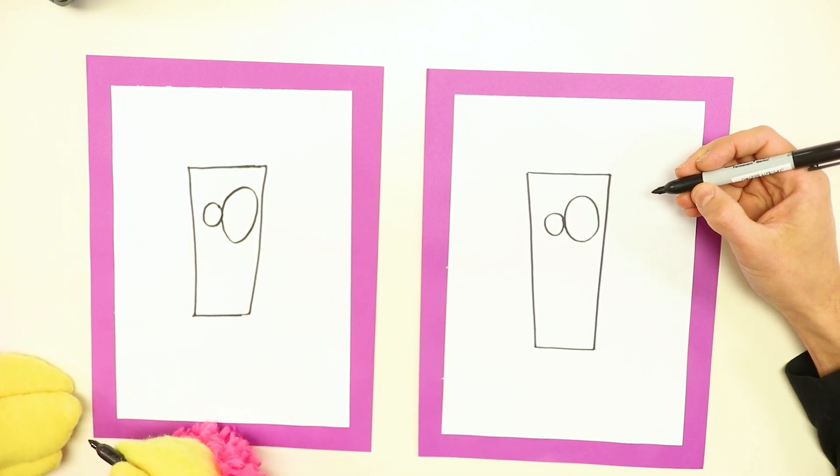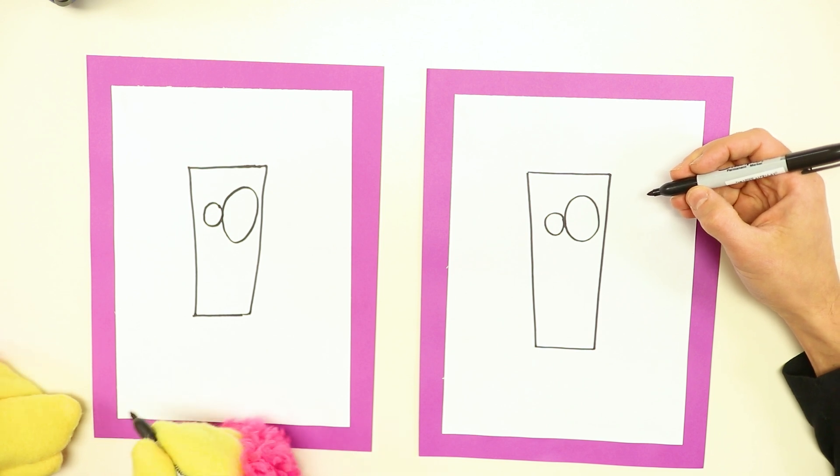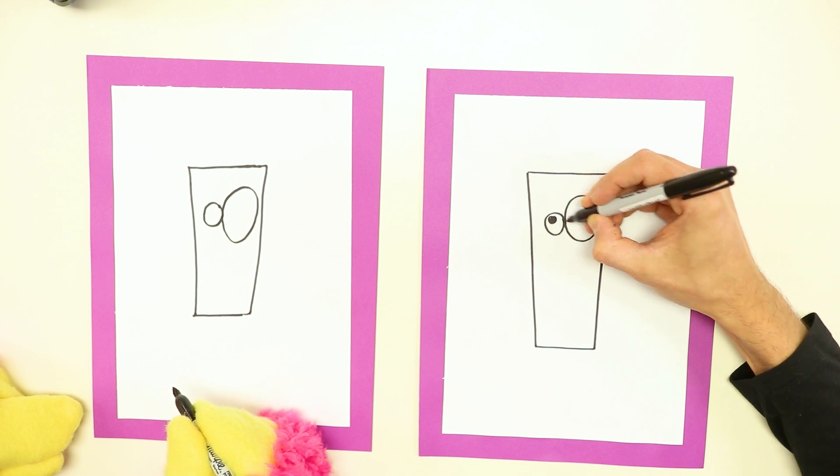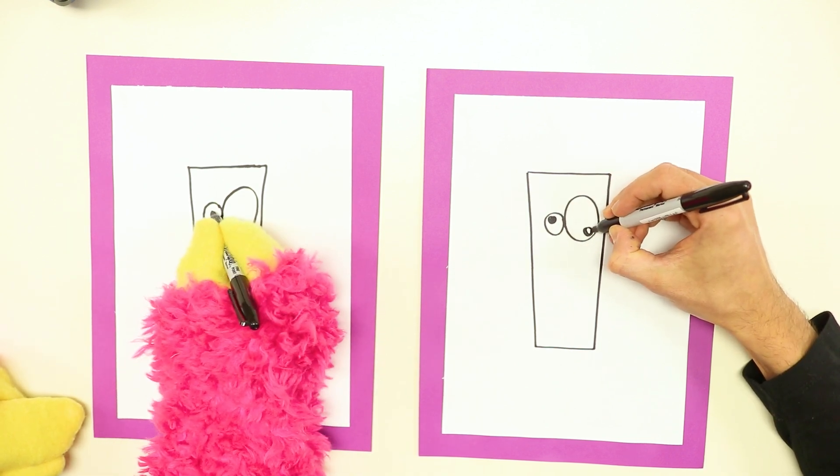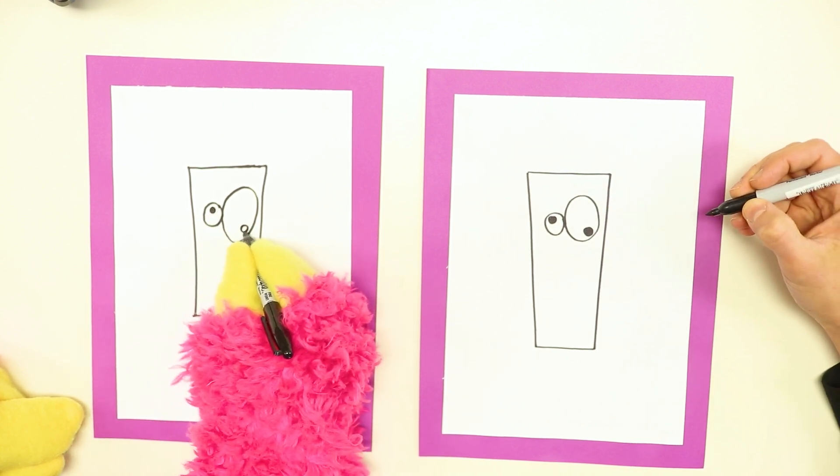The next thing you want to do is add the pupils. The dots in the eyes. And to make him look extra anxious I often put one up here and one down here. But you can put them anywhere you want. That's funny. He does look anxious.